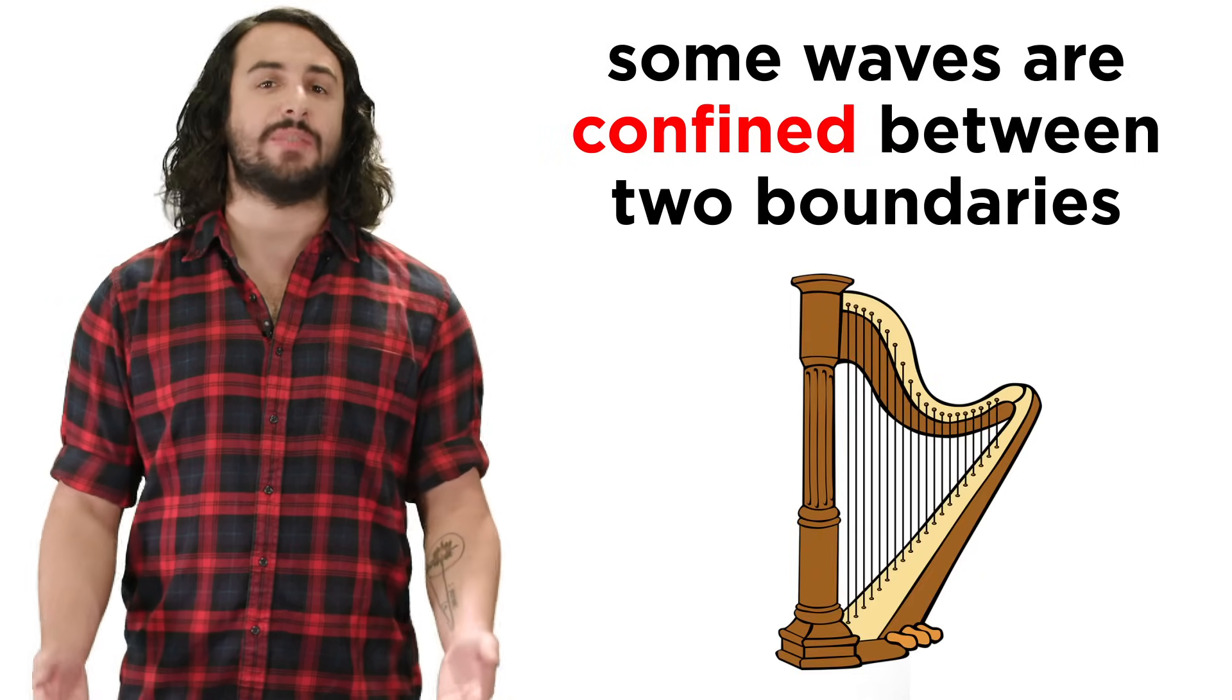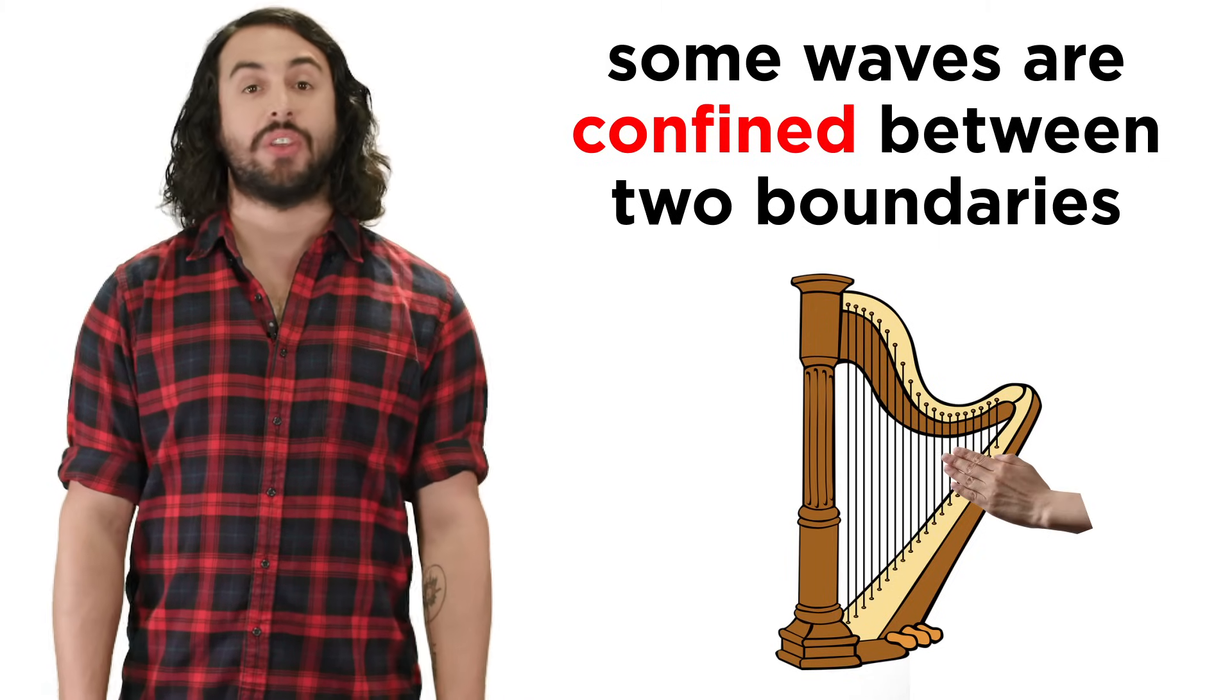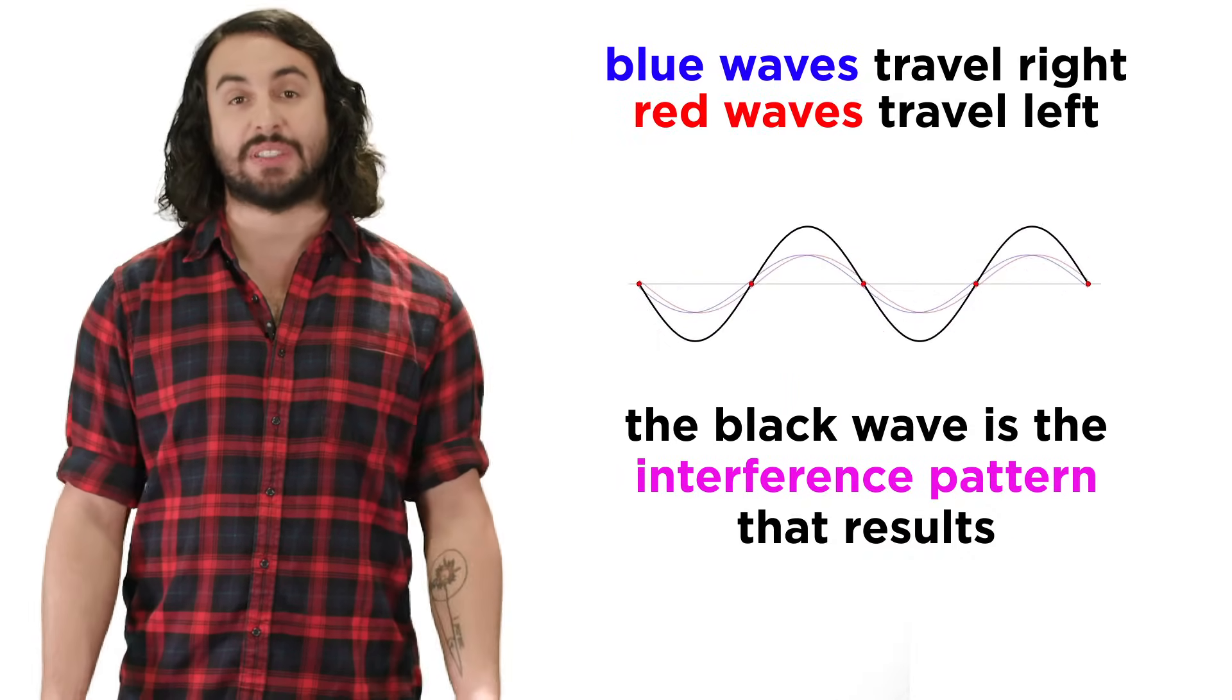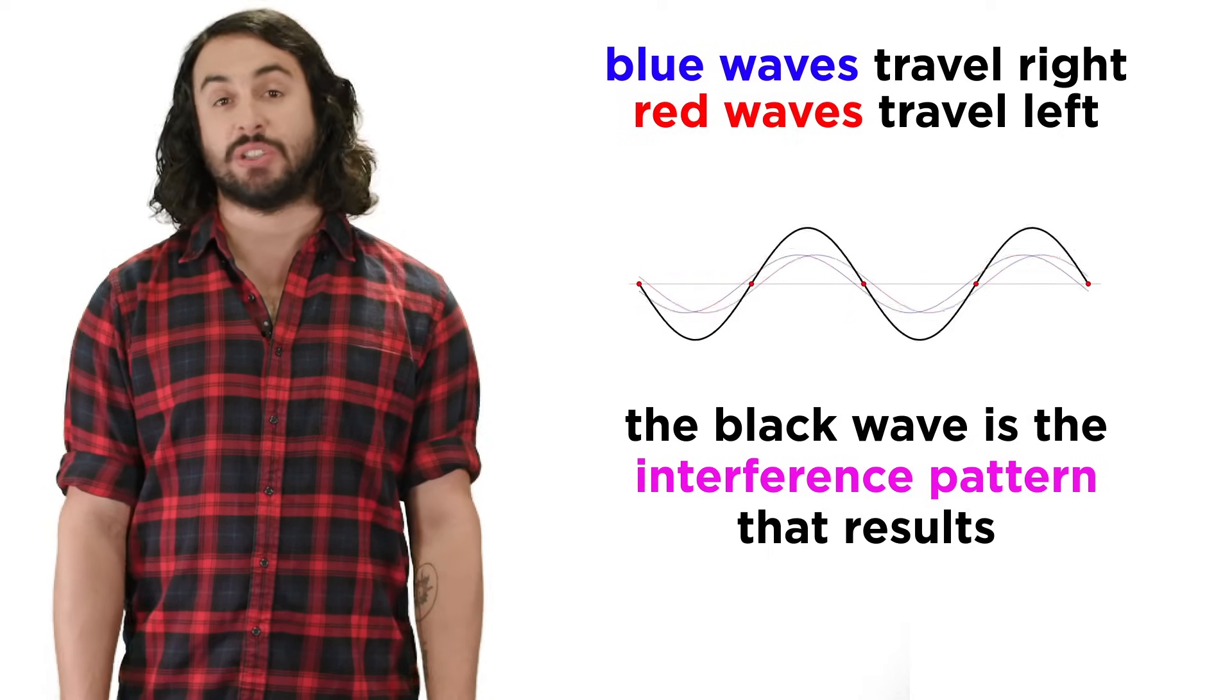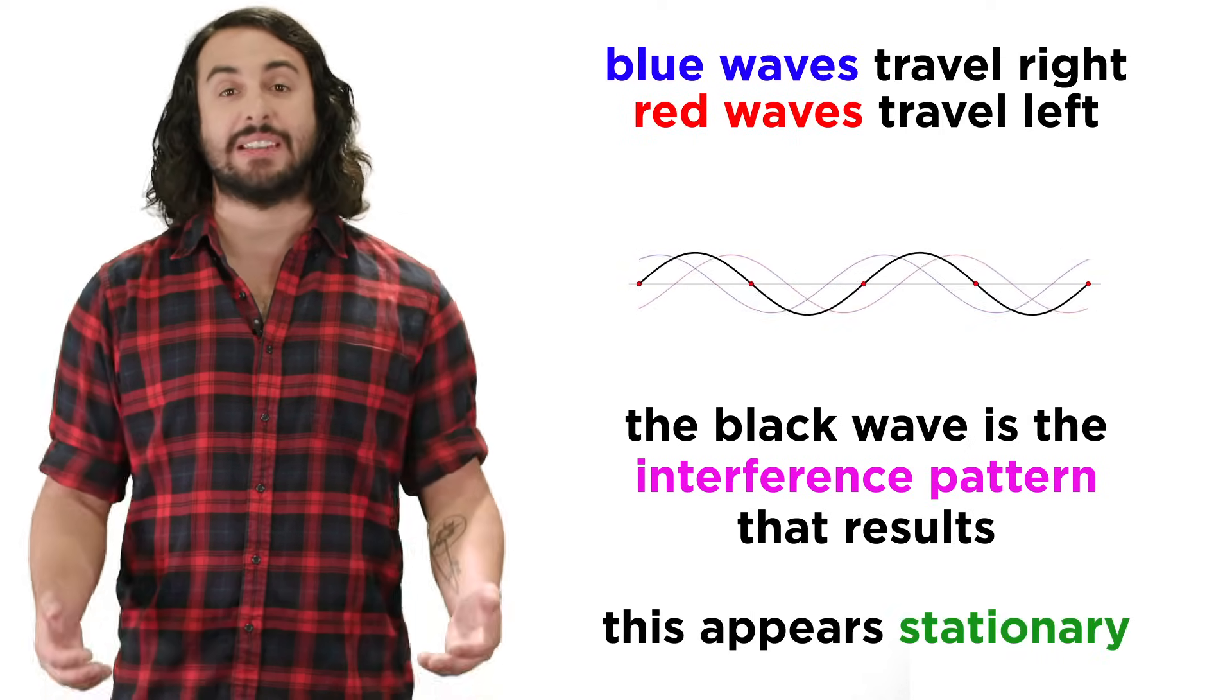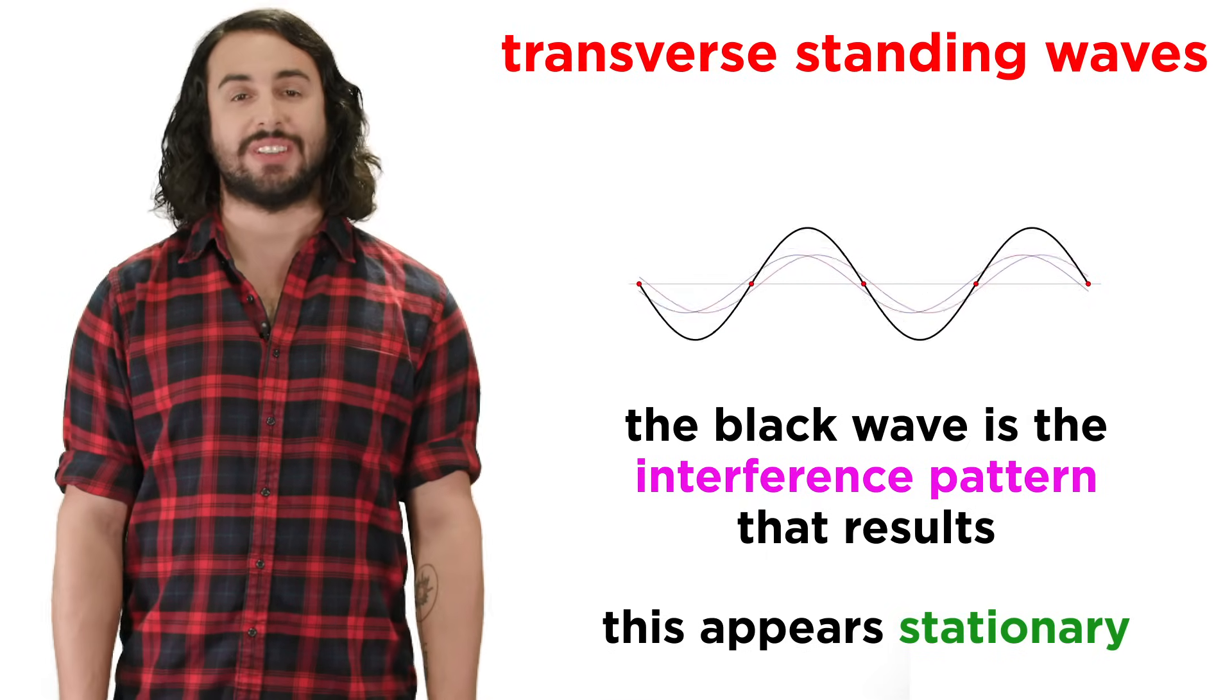Some waves are confined between two fixed boundaries, like on a plucked string, where they will experience repeated reflections at both ends of the string, resulting in a multitude of wave cycles traveling in both directions. If this vibration is of a particular frequency, it will produce an interference pattern that appears to be a completely stationary wave. These are called transverse standing waves.